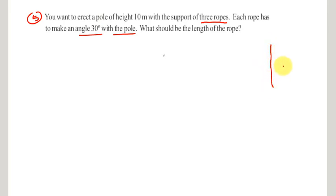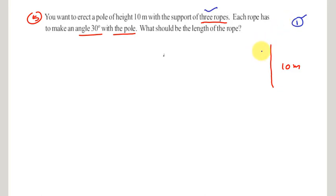To erect the pole of height 10 meters with the help of three ropes, instead of taking all three ropes at once, let me work with just one rope first. By finding the length of one rope, we can then find the length of three ropes by multiplying by three.